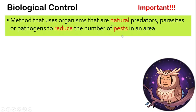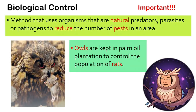What are pathogens? Pathogens are bacteria that will cause an animal to get sick. One good example is in a palm oil plantation, where farmers keep owls. The owls will eat the rats, and by keeping owls in the palm oil plantation, farmers can control the population of rats.